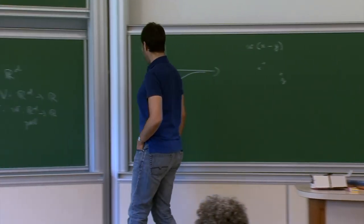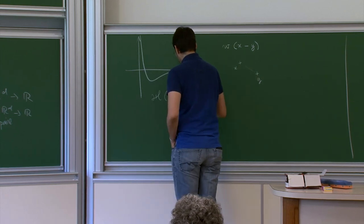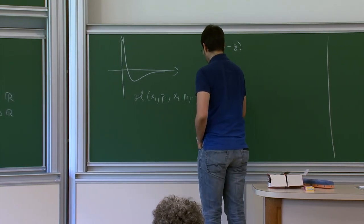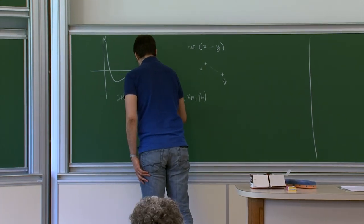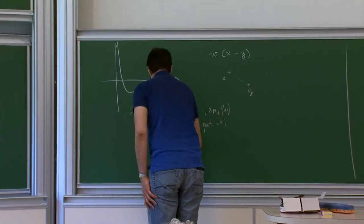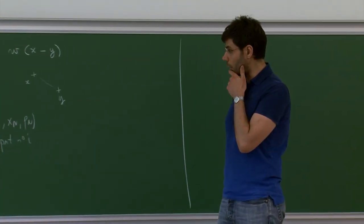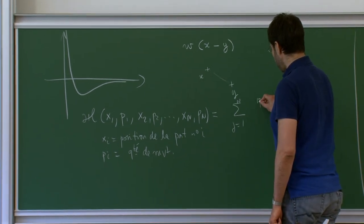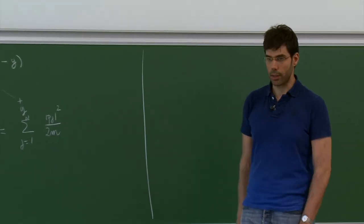To describe this system of N particles, it is described by a classical Hamiltonian — so we are in classical mechanics — which is a function of 2ND variables X_1, P_1, X_2, P_2, ..., X_N, P_N, where each X_i is the position of particle i and P_i is its momentum, essentially M times the velocity. The Hamiltonian is the sum over j=1 to N of the kinetic energies P_j²/2M, which is (1/2)MV².